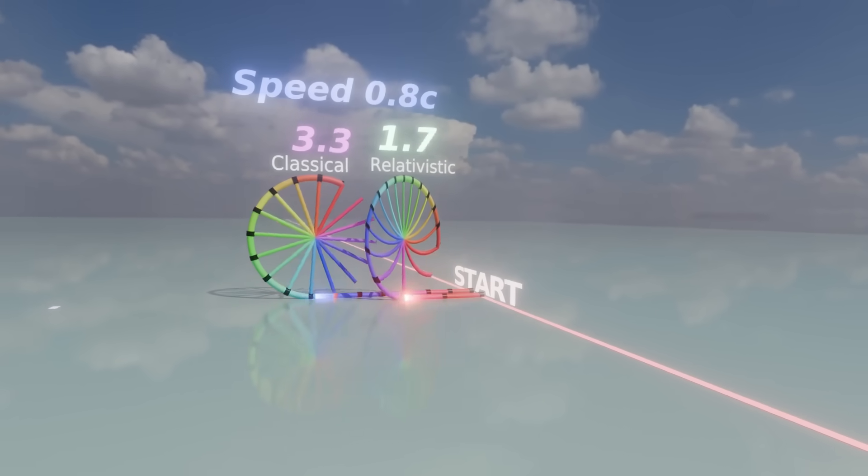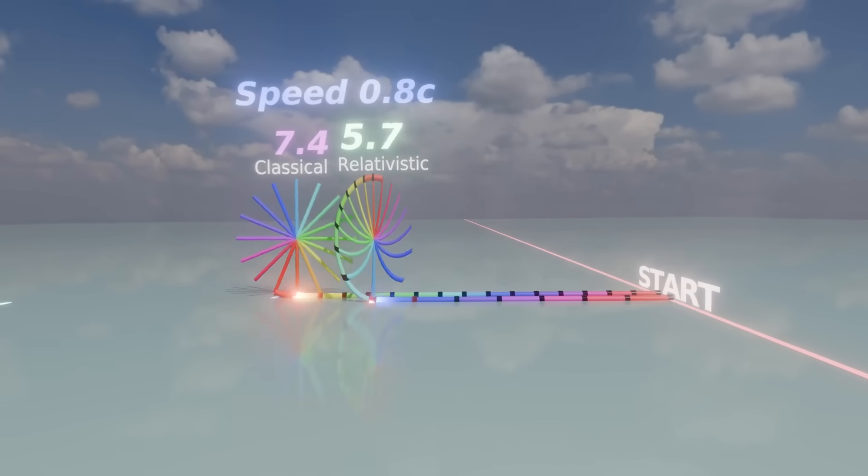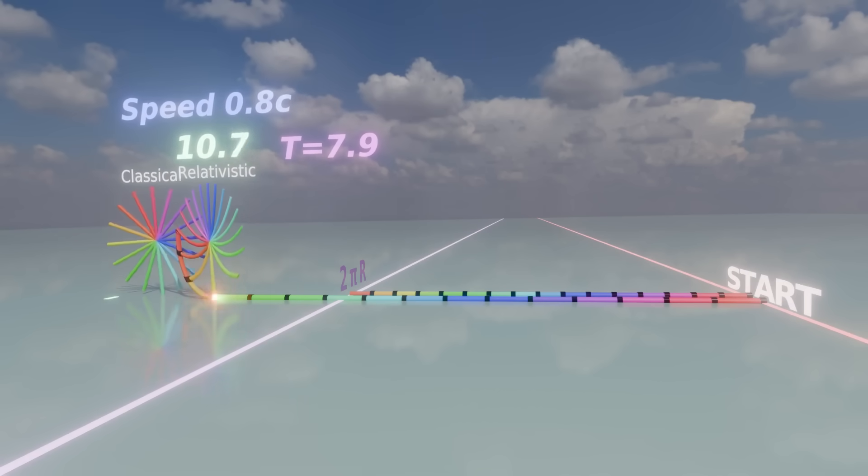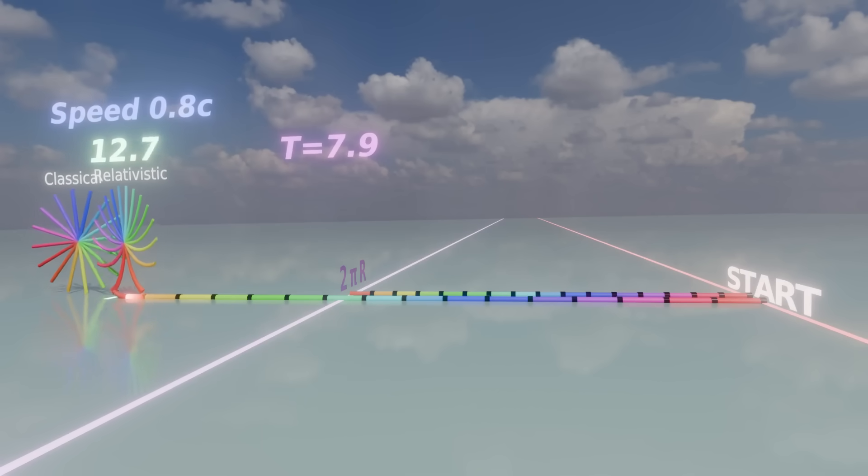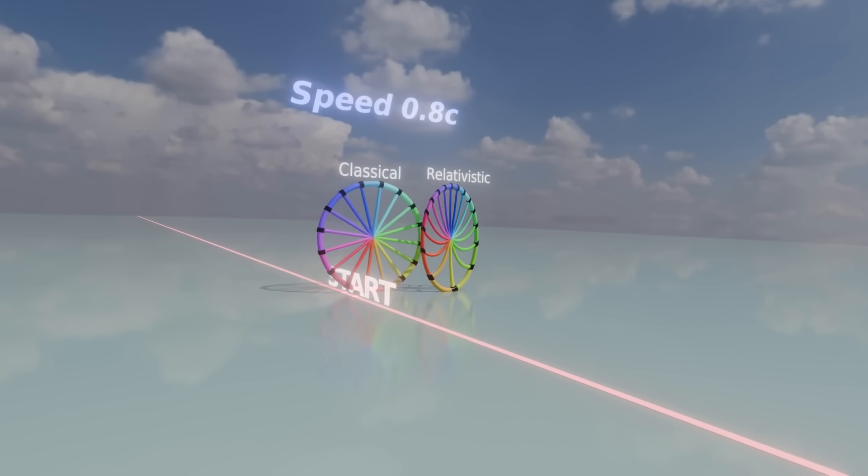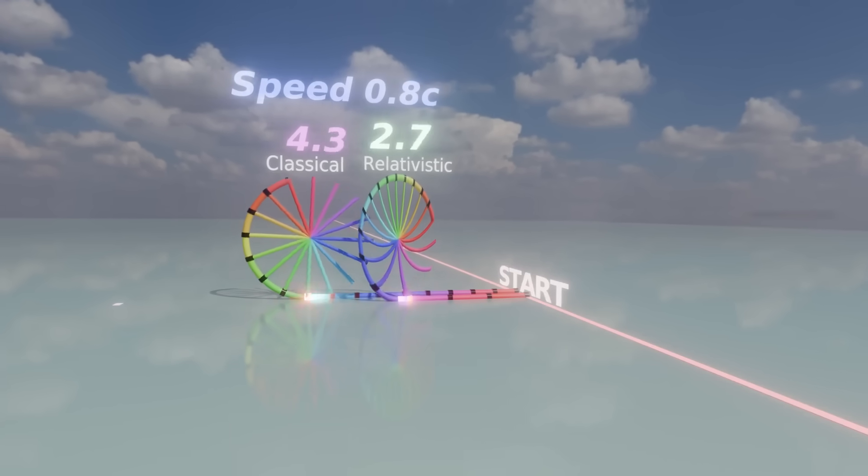Next to the relativistic rolling wheel, let's put a classical wheel and perform the unwinding process for both. The classical wheel completes the process faster, resulting in the expected result of 2π times the radius. The relativistic wheel, although seemingly smaller, goes on for longer and results in a longer unwound rim.